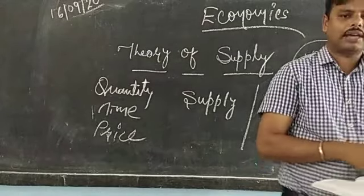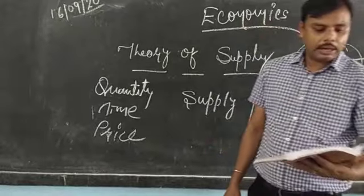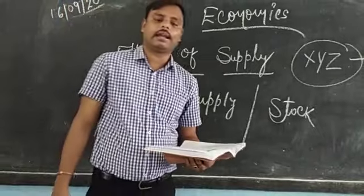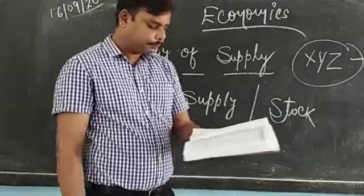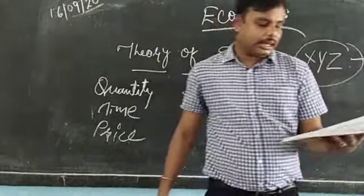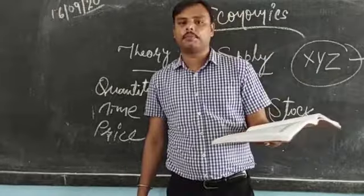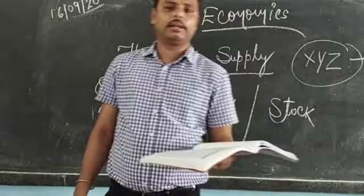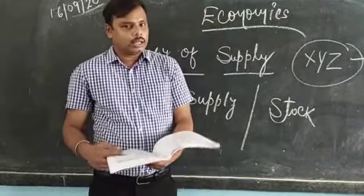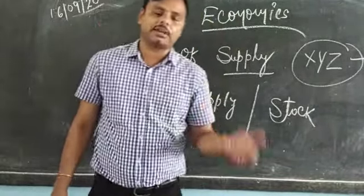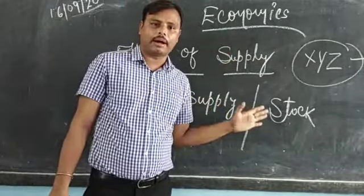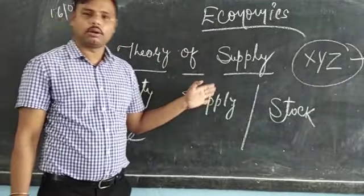Coming to the definition of supply, it is on page number 81, chapter number 4. The theory of supply is exactly parallel to that of theory of demand. This chapter does not require much effort because if you have understood theory of demand, theory of supply is very much similar to it.